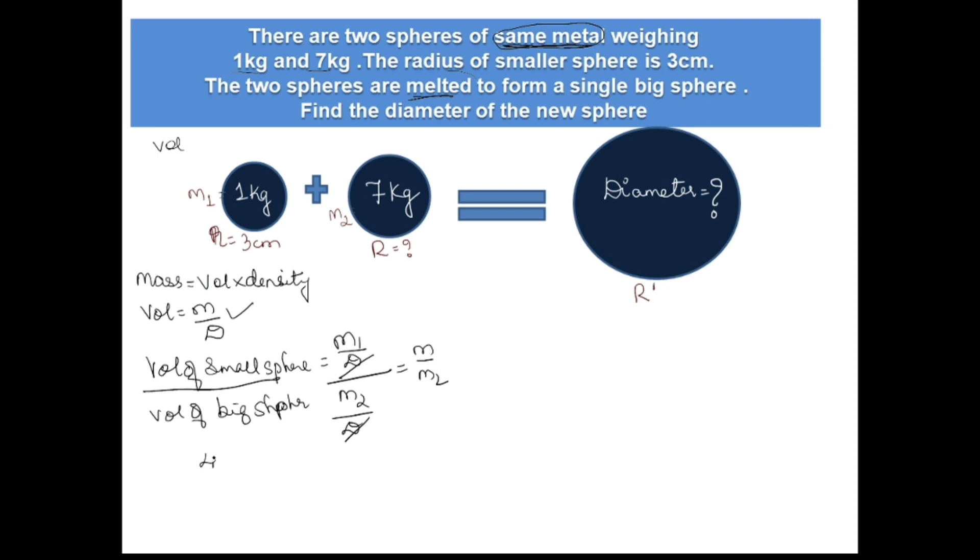So that means volume of small sphere is 4/3 π (small r)³ divided by 4/3 π (capital R)³, which equals 1 divided by 7, because they gave m1 as 1 kg and m2 as 7 kg. Cancel 4/3 π first.